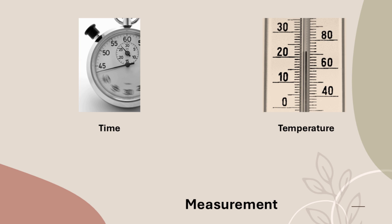Temperature tells us how hot or cold a body or an environment is. It is measured in degrees Celsius or degrees Fahrenheit. The normal body temperature of humans is 98.4 degrees Fahrenheit or 37 degrees Celsius. When you might have a fever, your temperature is measured using a clinical thermometer — you must have seen one at home. Nowadays a digital thermometer is used to measure body temperature, and a room thermometer is used to measure room temperature.